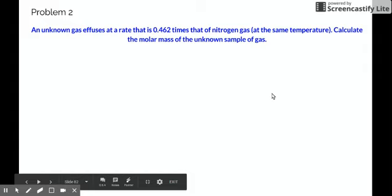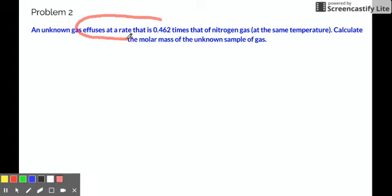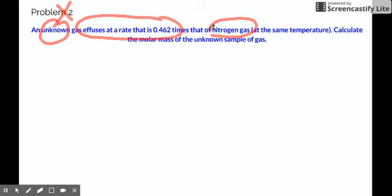So problem two, it talks about the rate already. You are given the rate. So it effuses at a certain rate, 0.462 times, and it's unknown. So unknown is always denoted as X, unknown gas. That of nitrogen gas. So you don't know one gas, but you know the other gas at the same temperature. Calculate the molar mass of the unknown sample of gas. Molar mass is MM.